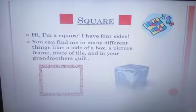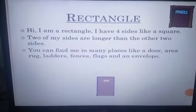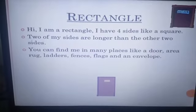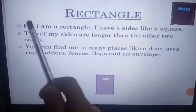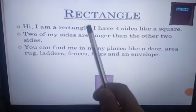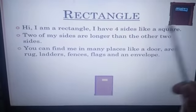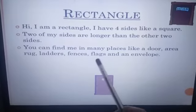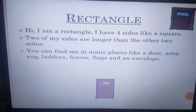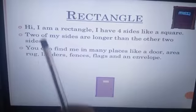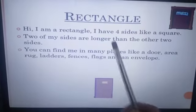Now we are going to move to the next shape, that is rectangle. What is rectangle saying to you? Hi, I am a rectangle. I have four sides like a square. Rectangle also has one, two, three, four — four sides.